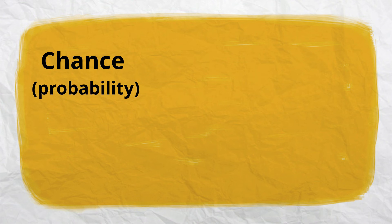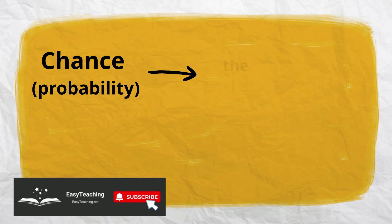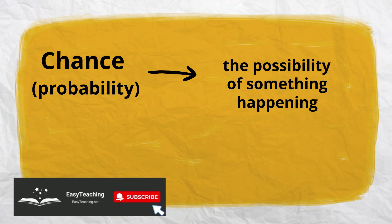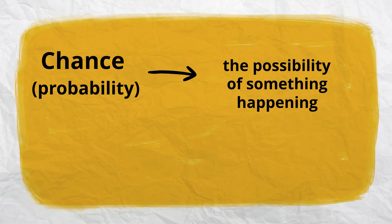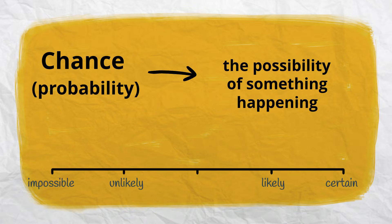Chance or probability refers to the possibility of something happening. Chance is often represented on a scale like this. Words such as likely, unlikely, certain, impossible, and even chance can be used to describe the likelihood of an event occurring. Numbers are also used.